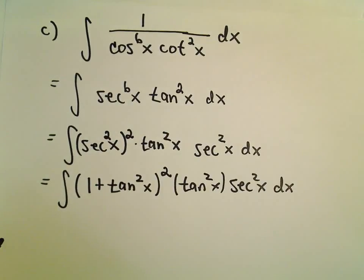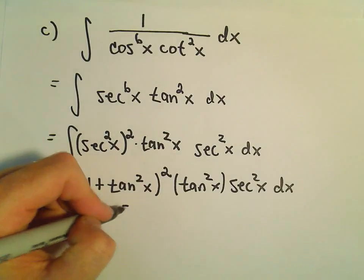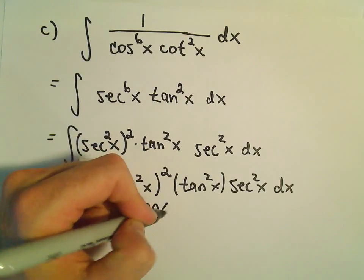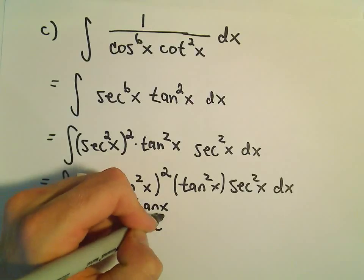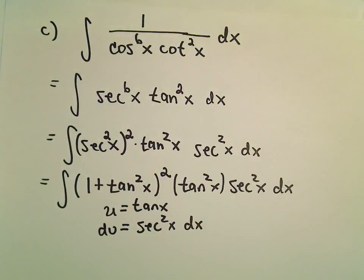This is where we'll do our u substitution. If we let u equal tangent of x, our du is secant squared x dx.